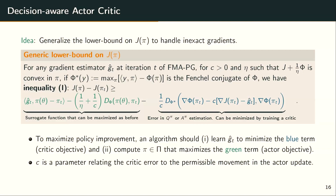To maximize policy improvement J(phi) - J(phi_t), an algorithm should learn G_hat_t to minimize the blue term (critic objective) and compute a policy maximizing the green term (actor objective). This gives a joint objective for the actor and critic. The hyperparameter C balances how much the actor can move versus how large the critic error is — if the critic error is large, set C small to increase regularization and limit actor movement; if small, take bigger steps.